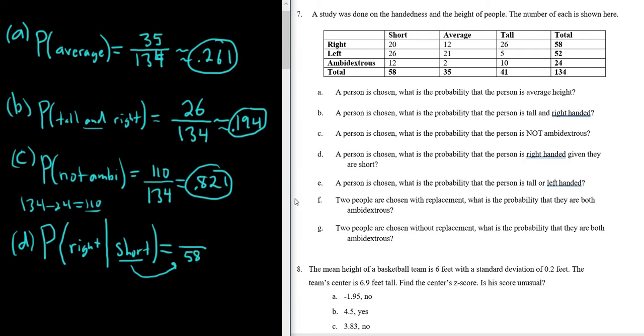Always, whenever you have a given, instead of using the whole 134, you're going to use what's after this line. You're going to use the short. So from the short people, how many are right-handed? Only 20. So 20 over 58. This will be 0.345. Again, if we round to three decimal places, 0.345.